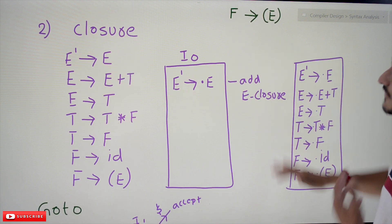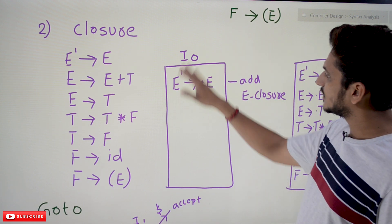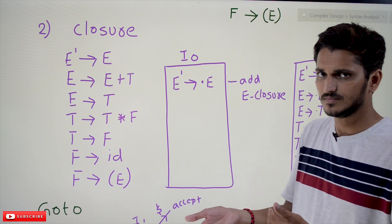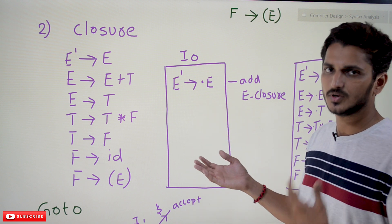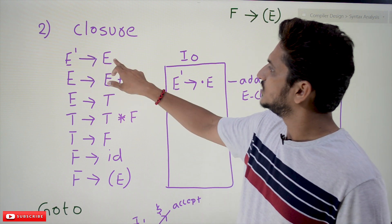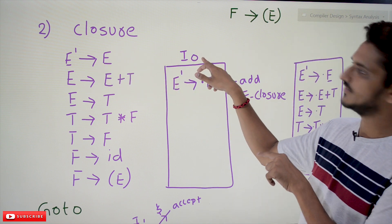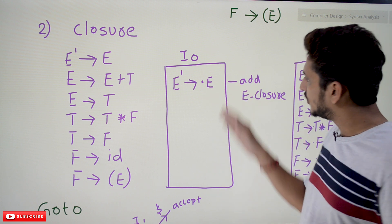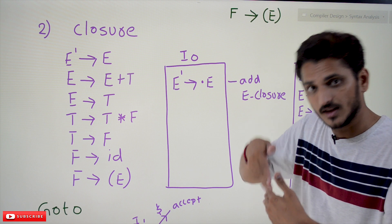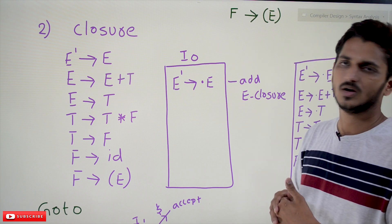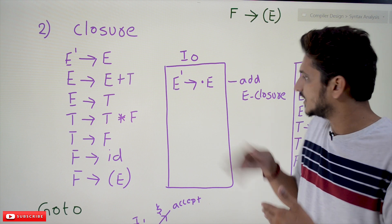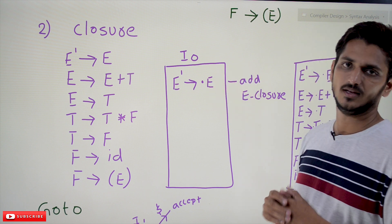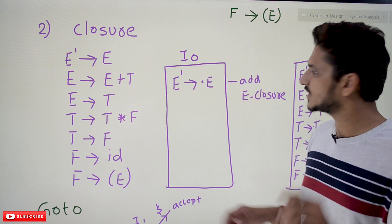The next step is identifying the closure for I₀. LR(0) items are constructed using a state diagram — similar to what you know from theory of computation. E' → E is added to our first state. The state I₀ contains: E' → •E. The dot represents the current position in the production. Since we are at the starting position, the dot is before E.